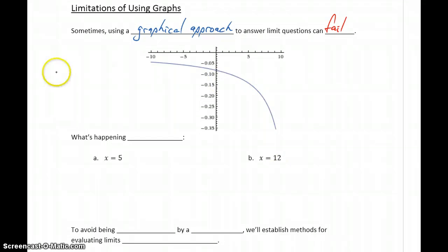But in reality, this is the graph of f(x) equals (x minus 5) over (x minus 5) times (x minus 12).